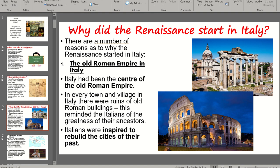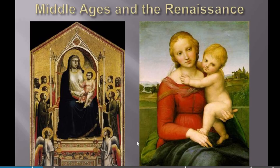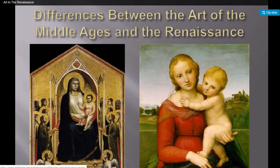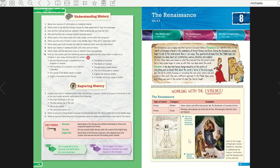Coming back to why the Renaissance started in Italy — keep that page blank where you put the heading 'The Renaissance' and go on to the next page. We're also going to open our books for this. This is page 97 in our books. It's a good idea to spend a minute or two reading the orange box at the top of page 97 — 'What the Renaissance was and why it's important.'